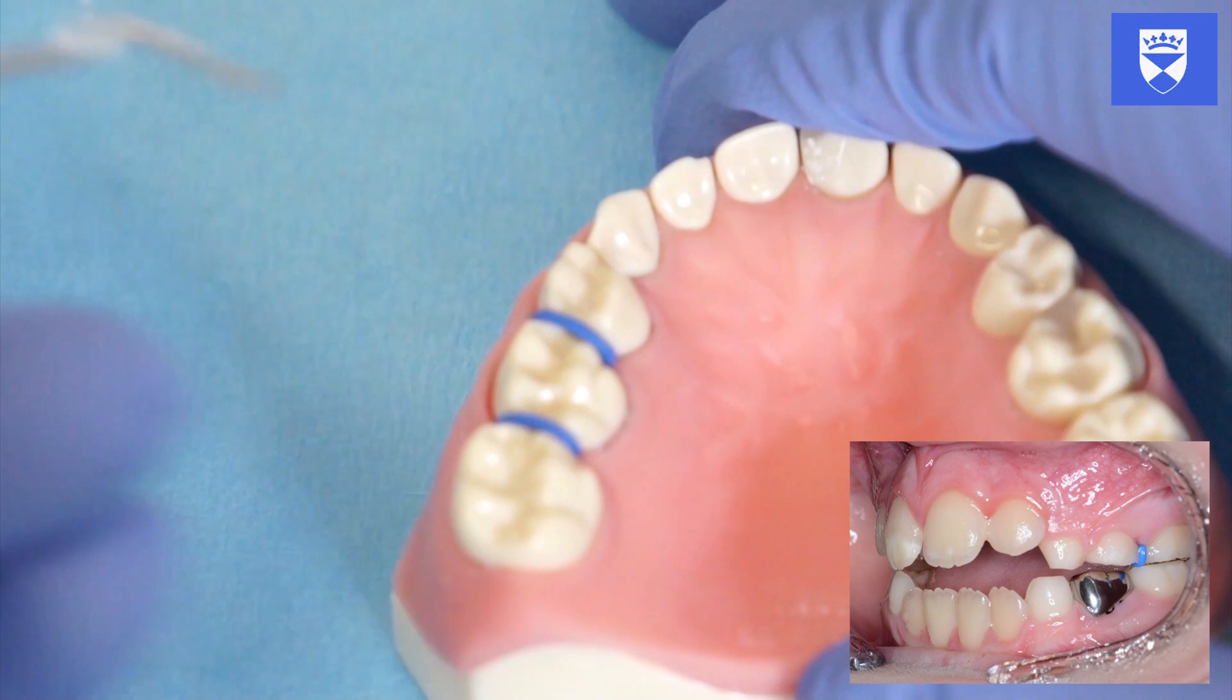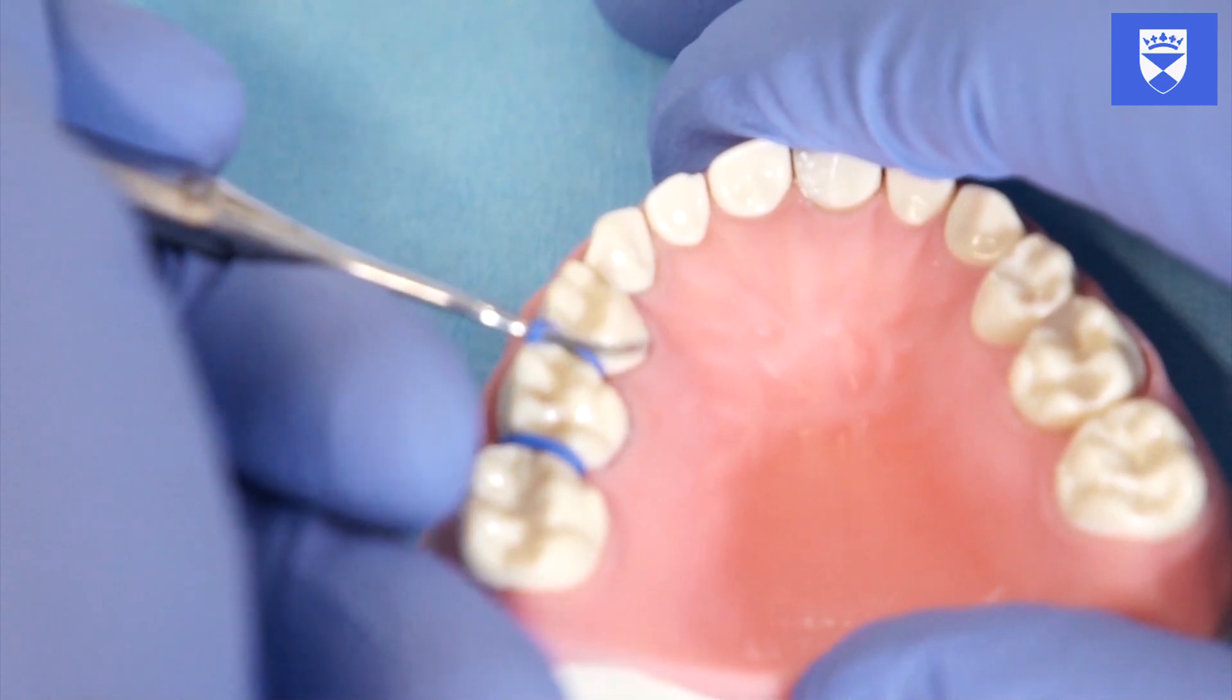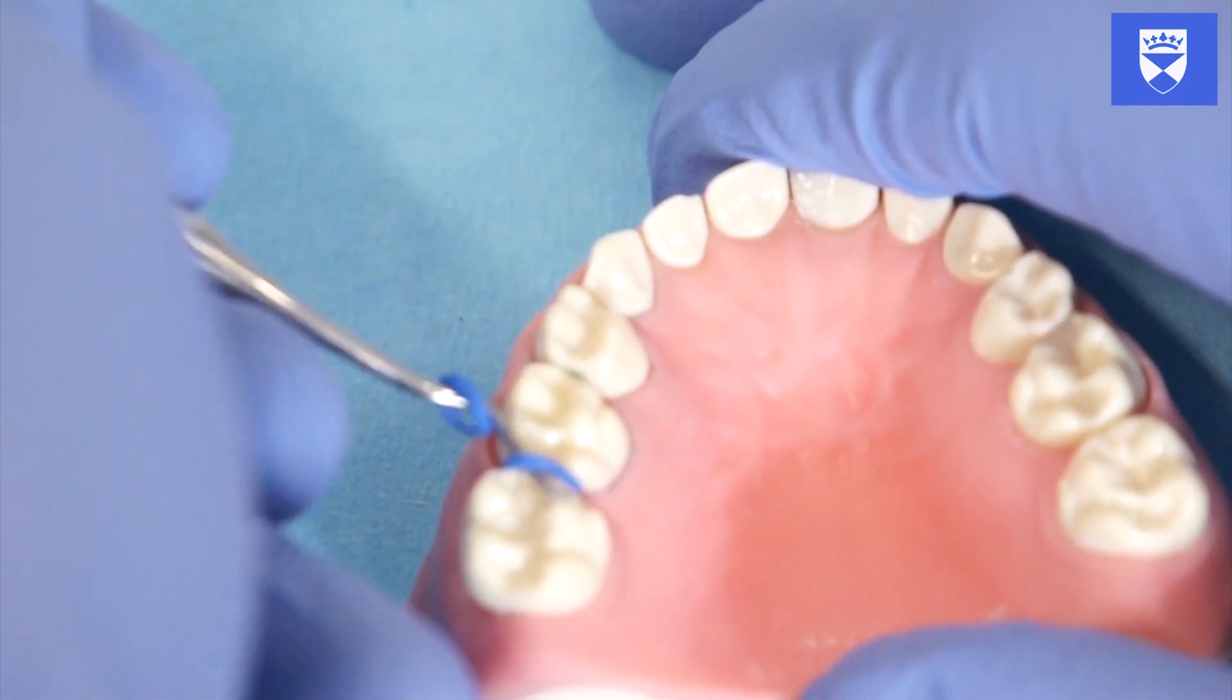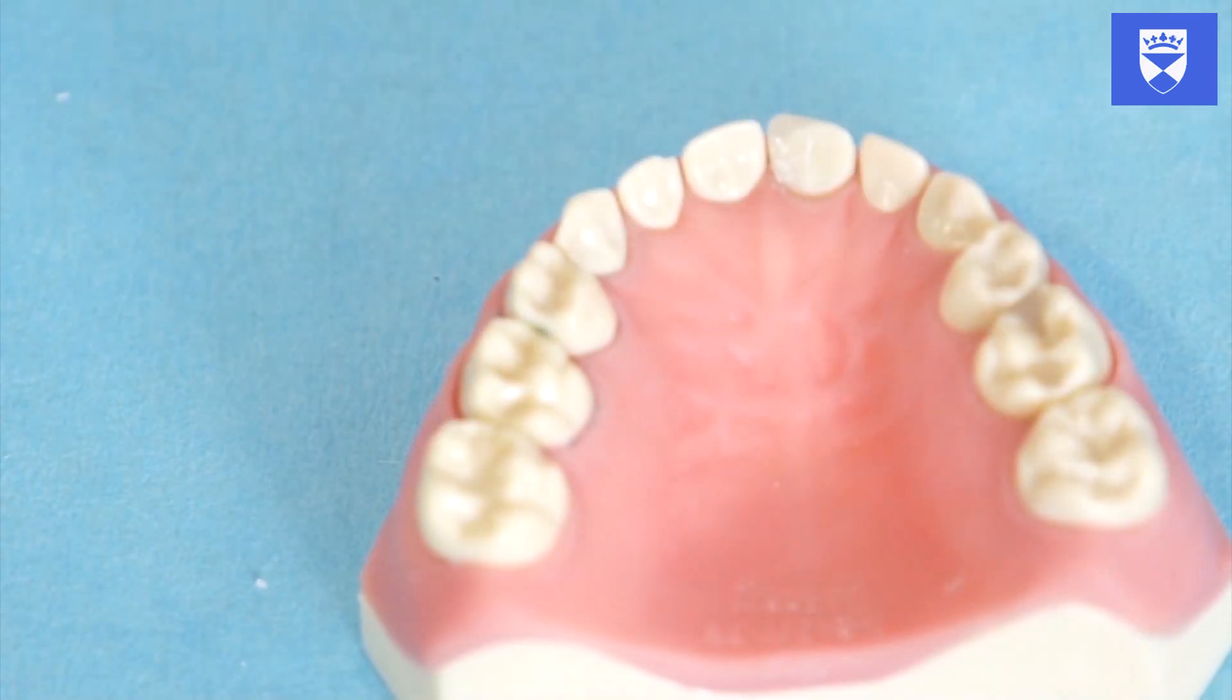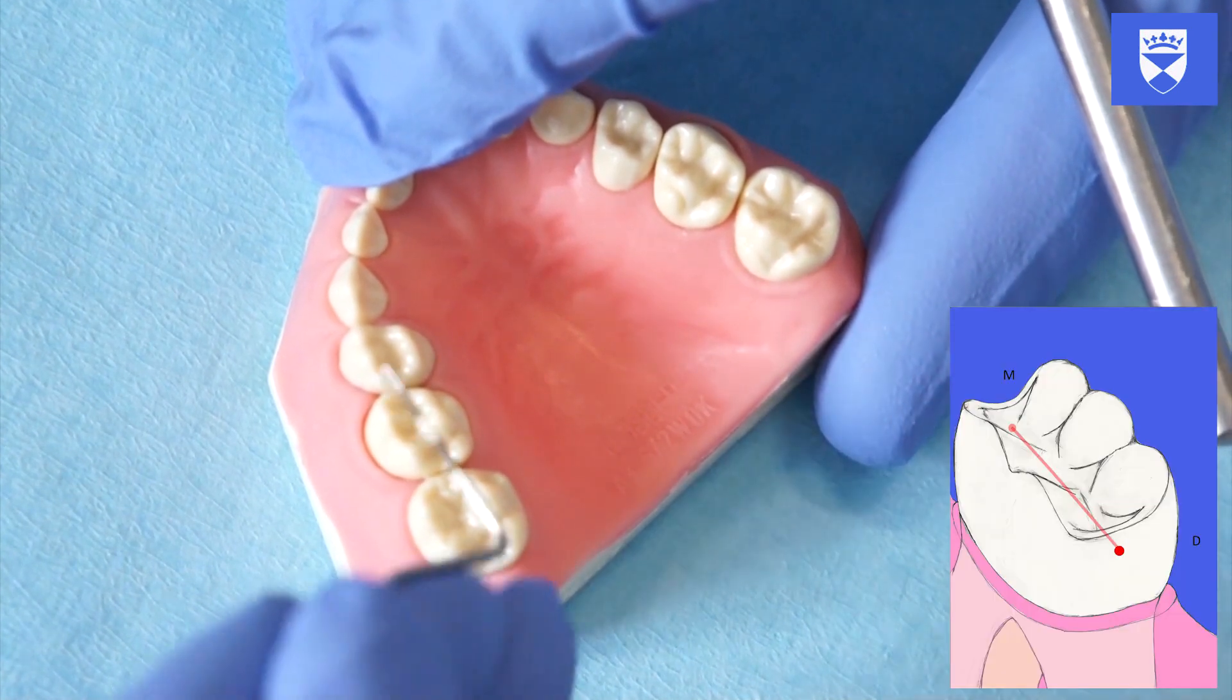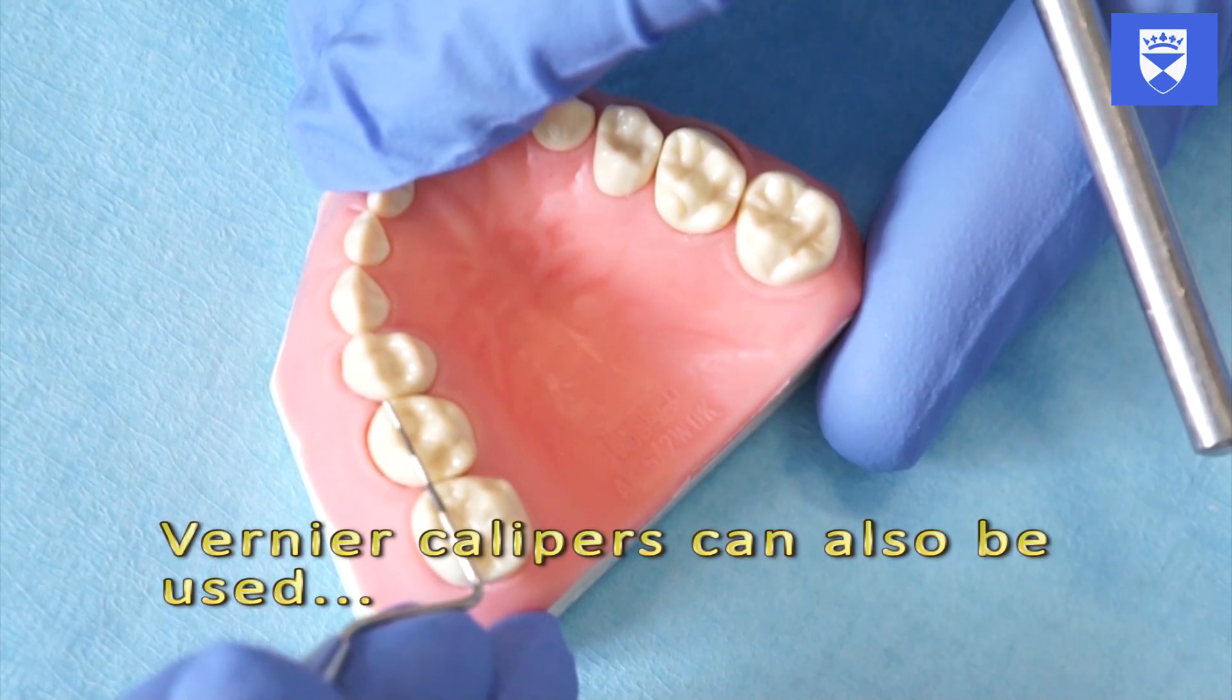Gently remove the separators. Assess whether enough space has been created to allow crown placement. Measure the mesiodistal width of the tooth to be crowned. This can be done using a number of measuring devices. A periodontal probe is effective.